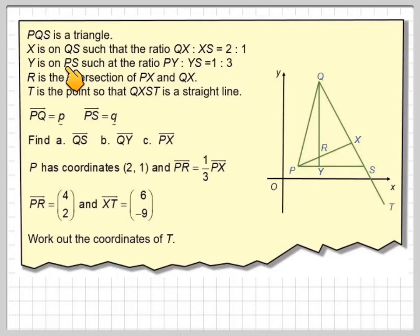PQS is a triangle. X is on QS such that the ratio QX to XS is 2 to 1. Y is on PS such that the ratio PY to YS...